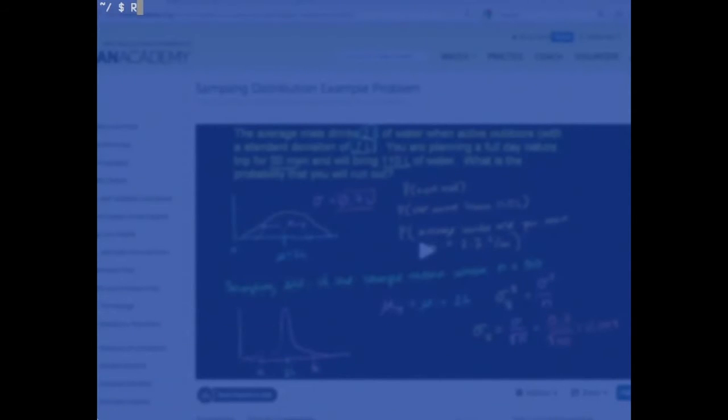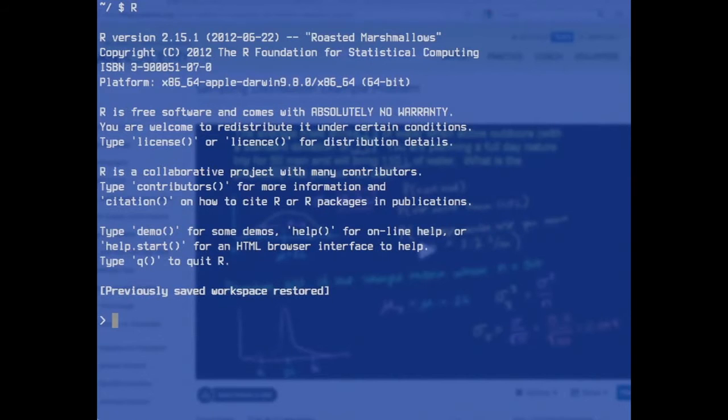Start R like that. There are also GUIs, but I'm only using the command line now. What was the population mean? It was two liters, and the population standard deviation was 0.7 liters. I'm just assigning variables here.